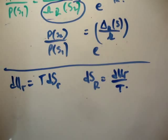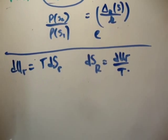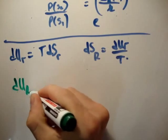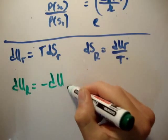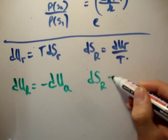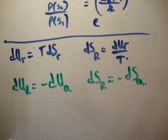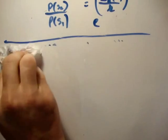The next thing to realize is that we have an isolated system — the atom and the reservoir together. So if we add energy to the reservoir we must have taken it from the atom, and vice versa. This means du_reservoir equals minus du_atom, or equivalently dS_reservoir equals minus dS_atom. And this is actually where the e to the minus E over kT comes from in the Boltzmann factor.